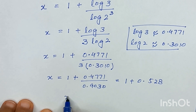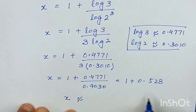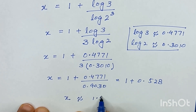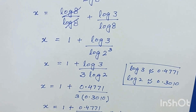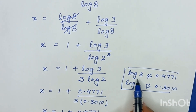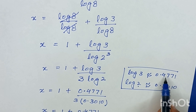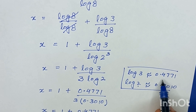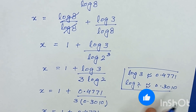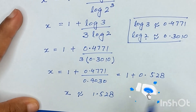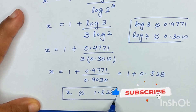So the approximated value of x is 1.528. Since log of 3 and log of 2 are approximated values, 0.4771 and 0.3010 are approximations, which means x is also an approximated value.